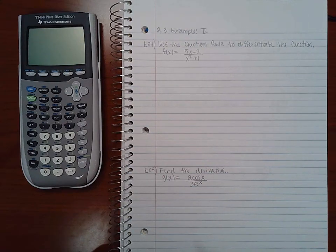In this section, we'll be covering examples part 2 of section 2.3. Example 4 here says use the quotient rule to differentiate the function.